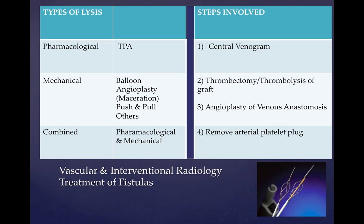Moving on to the types of lysis we can use for clots formed in AV fistulas: we have a pharmacological alternative, which is TPA; we have the mechanical option using balloon angioplasty, which can cause maceration of the clot; we have the push-pull technique; we have the Fogarty catheter; and we have many other mechanical devices such as the Tortola device, shown in the bottom right corner. Different devices might have their utility in different situations.